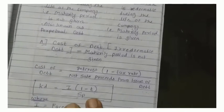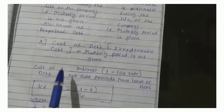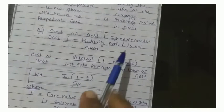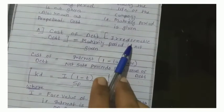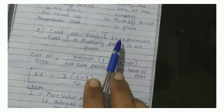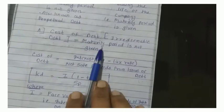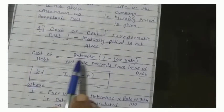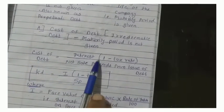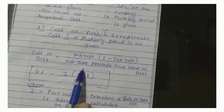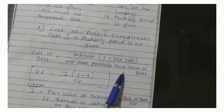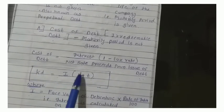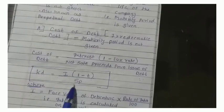We have read the formula for calculation of cost of debt in case of irredeemable debt. For irredeemable debt, where the maturity period is not given, the cost of debt KD equals: Interest multiplied by bracket (1 minus tax rate), divided by net sale proceeds from the issue of the debt. So KD = I(1−T) / SP.